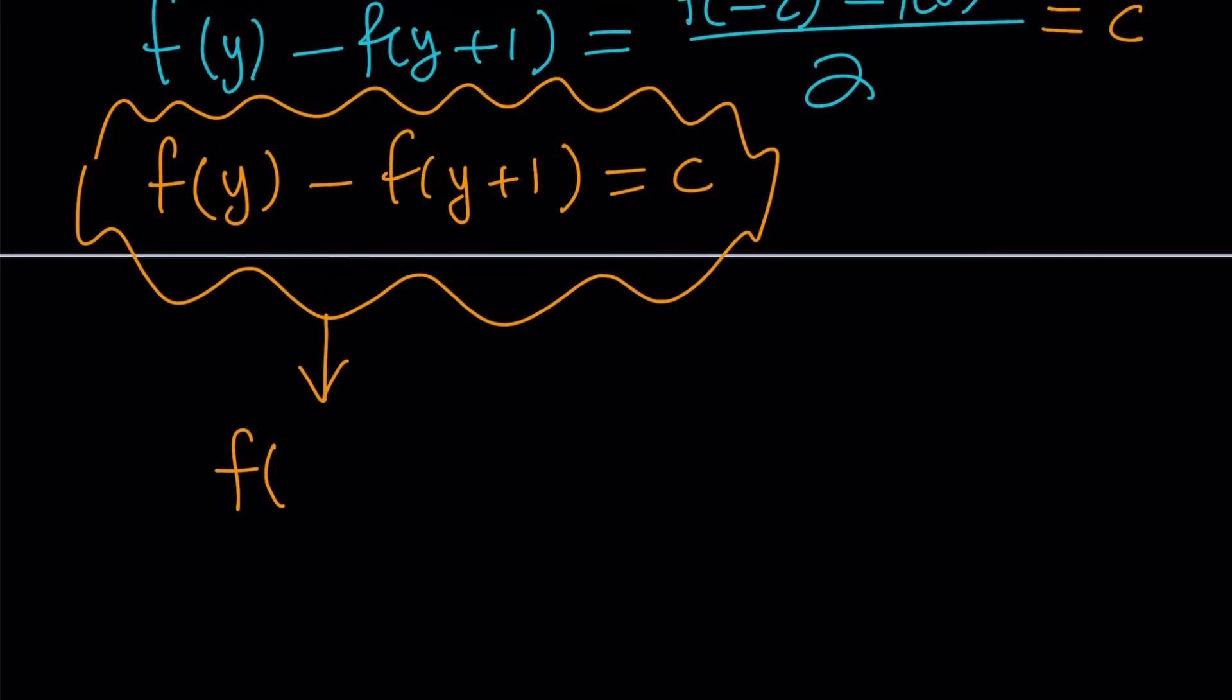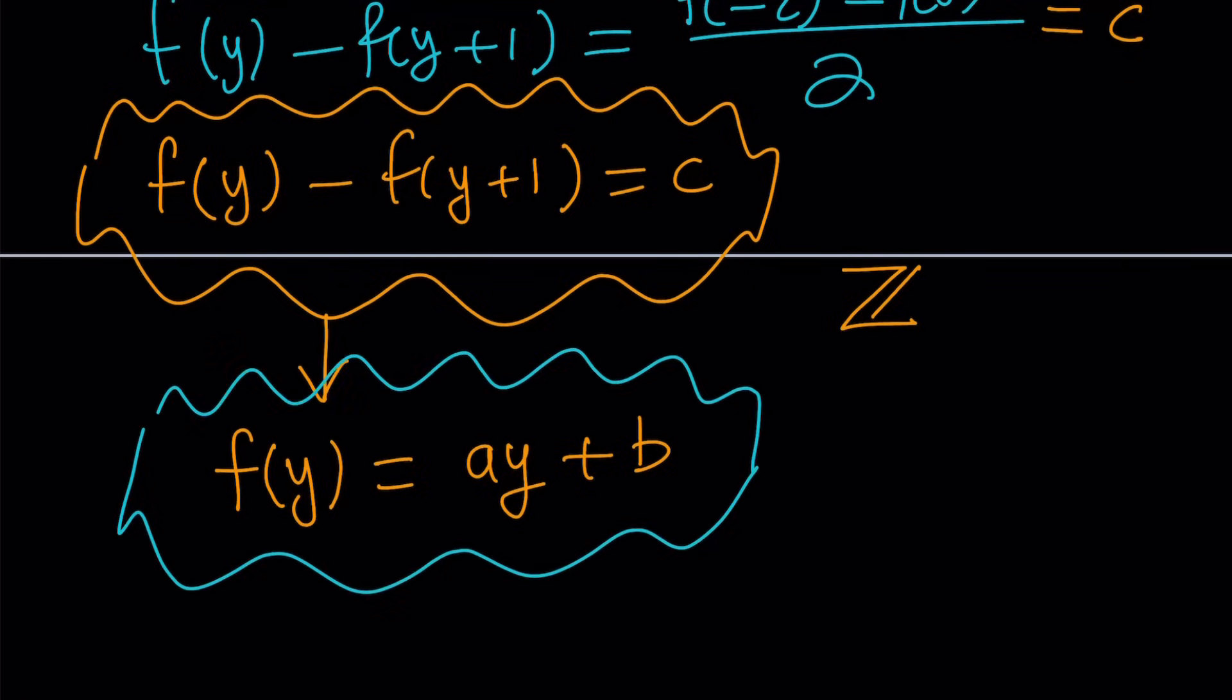If the domain and codomain were real numbers, then it would be a different story. But in this case, since we're defining it over the set of integers, we can safely say that f(y) needs to be a linear function. So that's the first step in solving this problem. First, we identify the type of function.